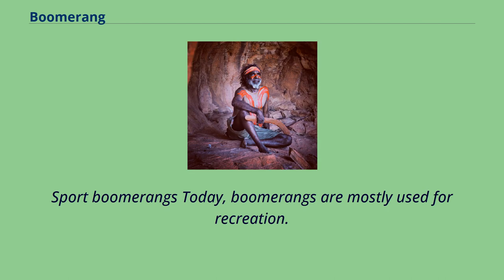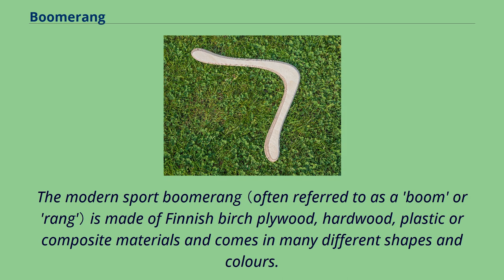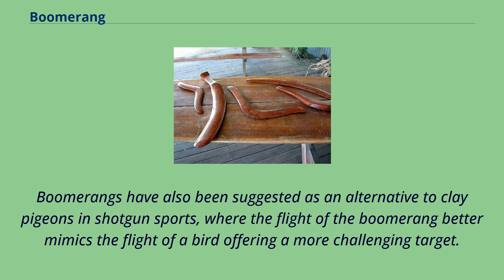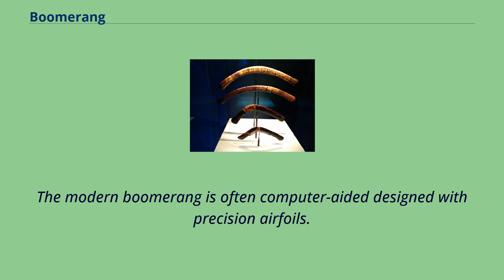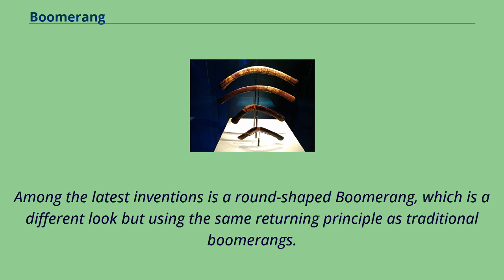Today, boomerangs are mostly used for recreation. There are different types of throwing contests: accuracy of return, Aussie round, trick catch, maximum time aloft, fast catch, and endurance. The modern sport boomerang is made of finished birch plywood, hardwood, plastic or composite materials, and comes in many different shapes and colors. Most sport boomerangs typically weigh less than 100 grams, with MTA boomerangs often under 25 grams. Boomerangs have also been suggested as an alternative to clay pigeons in shotgun sports, where the boomerang's flight better mimics that of a bird. The modern boomerang is often computer-designed with precision airfoils; more than two wings are often used as three or four wings provide more lift. Among the latest inventions is a round-shaped boomerang using the same returning principle, which allows for a safer catch.